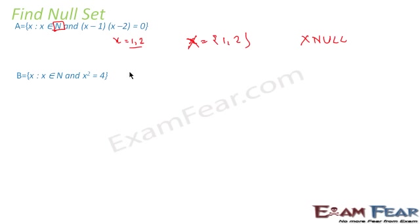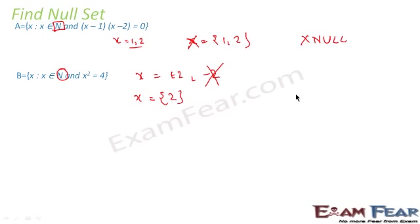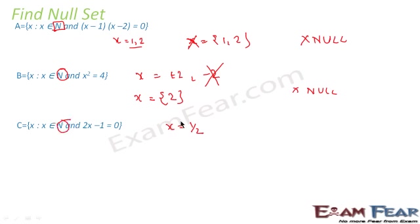Next example: x is a natural number and x² = 4, so x = +2 or −2. Since x must be a natural number, −2 is excluded. So the set is {2} — this is also not an empty set. Another example: 2x − 1 = 0 gives x = 1/2, but 1/2 is not a natural number, so the set has no elements. We can write it as φ — it is a null set.